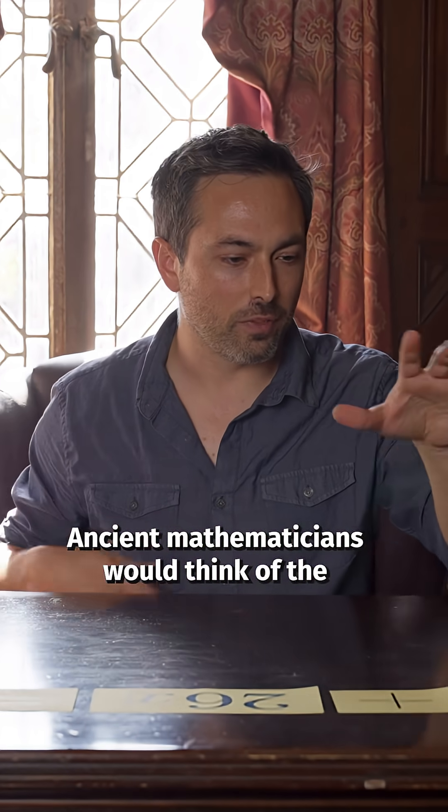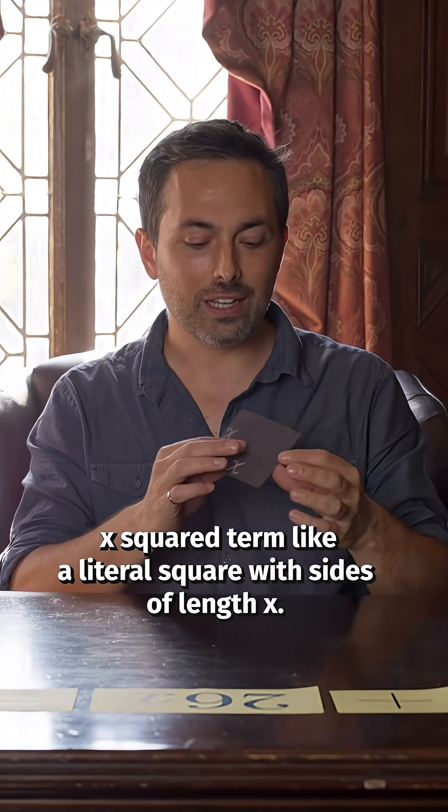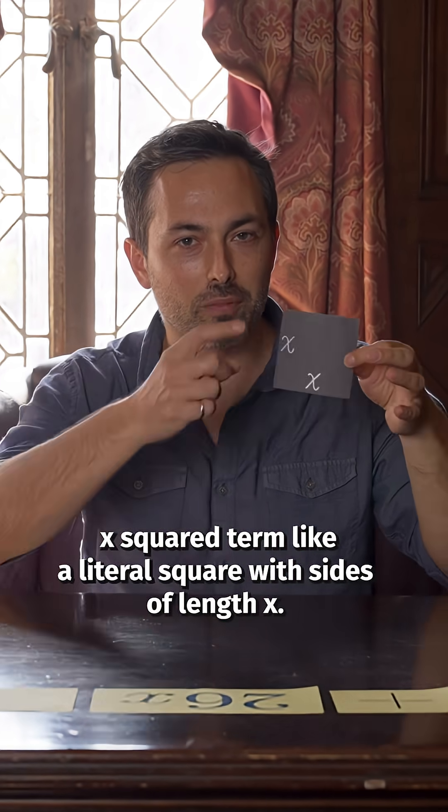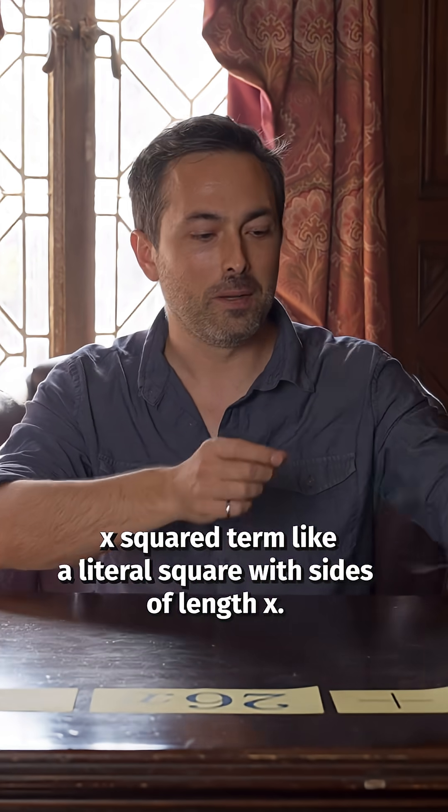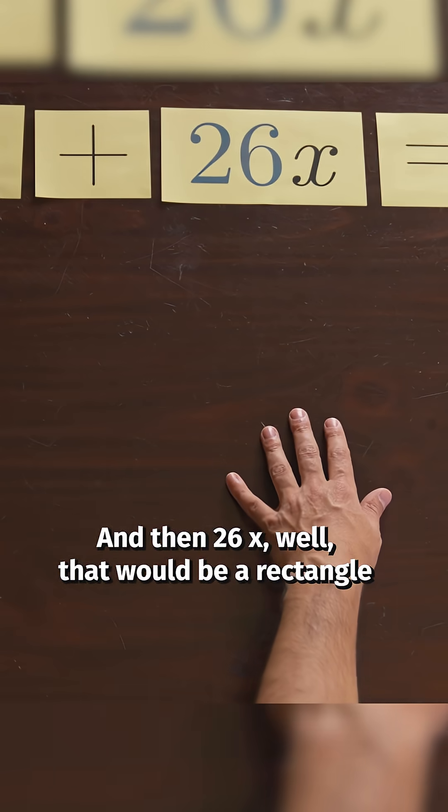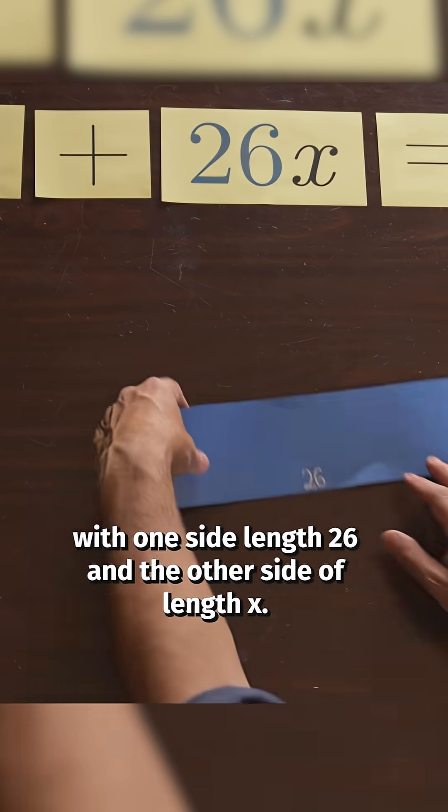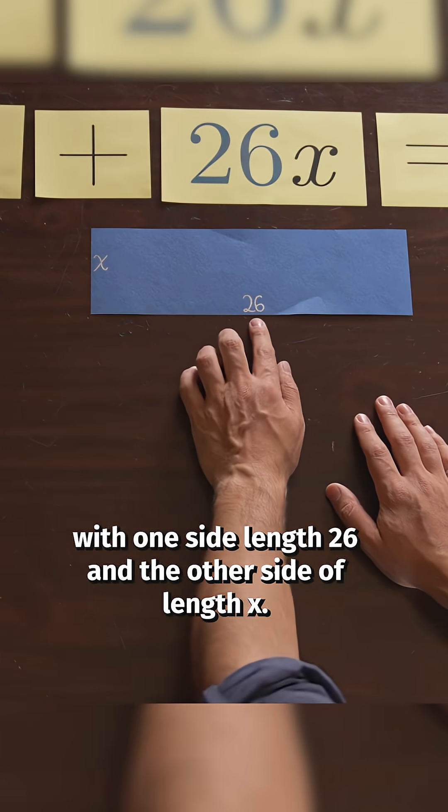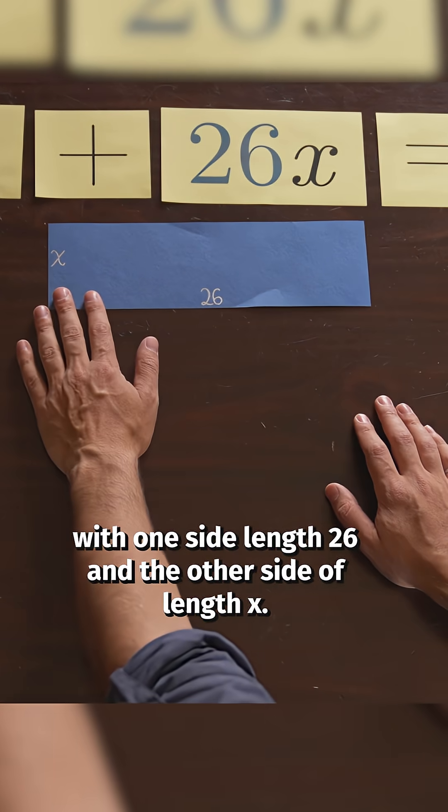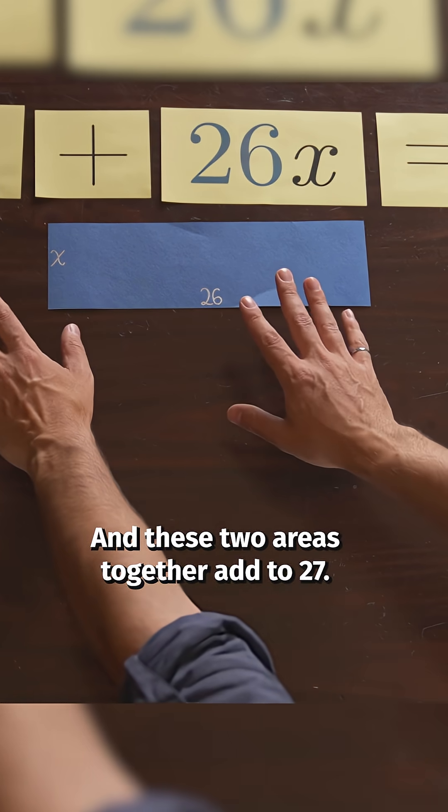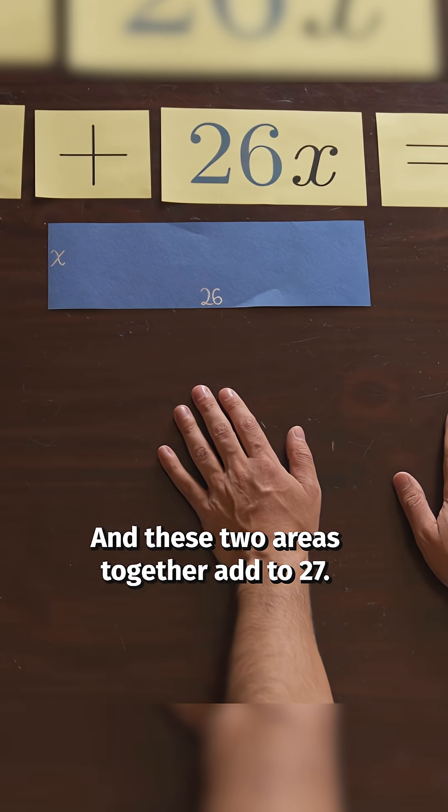Ancient mathematicians would think of the x squared term like a literal square with sides of length x. And then 26x, well that would be a rectangle with one side of length 26 and the other side of length x. And these two areas together add to 27.